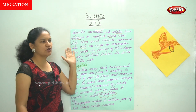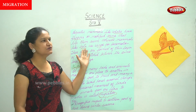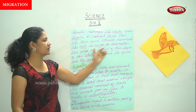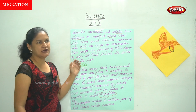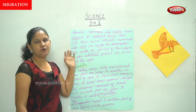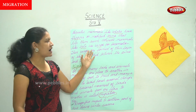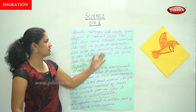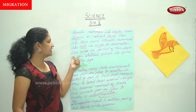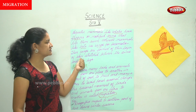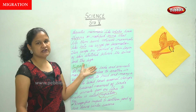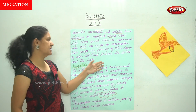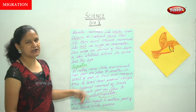Mammals like bats use wings for locomotion, and their wings are formed of a thin layer of skin stretched between the arms and the legs.